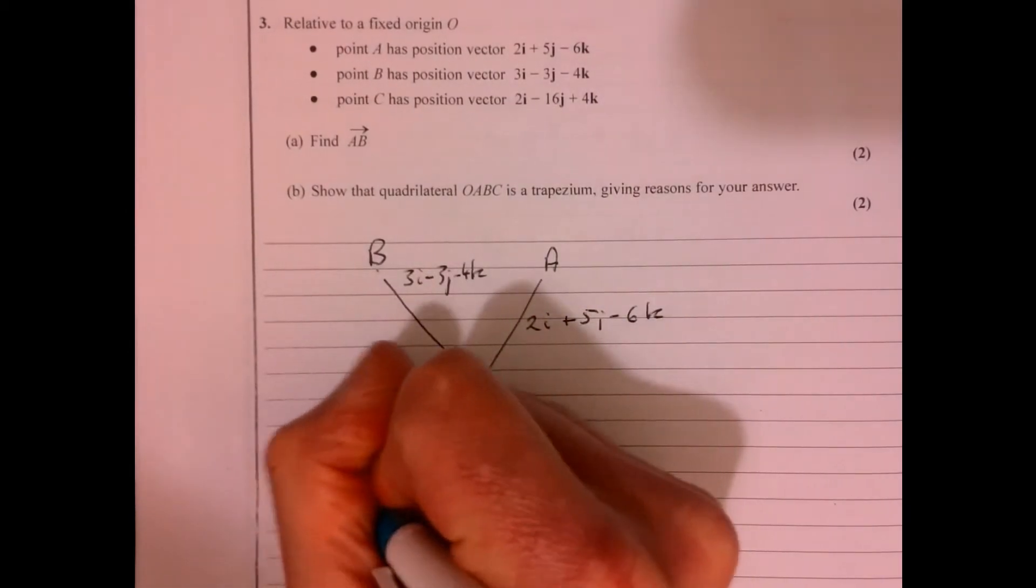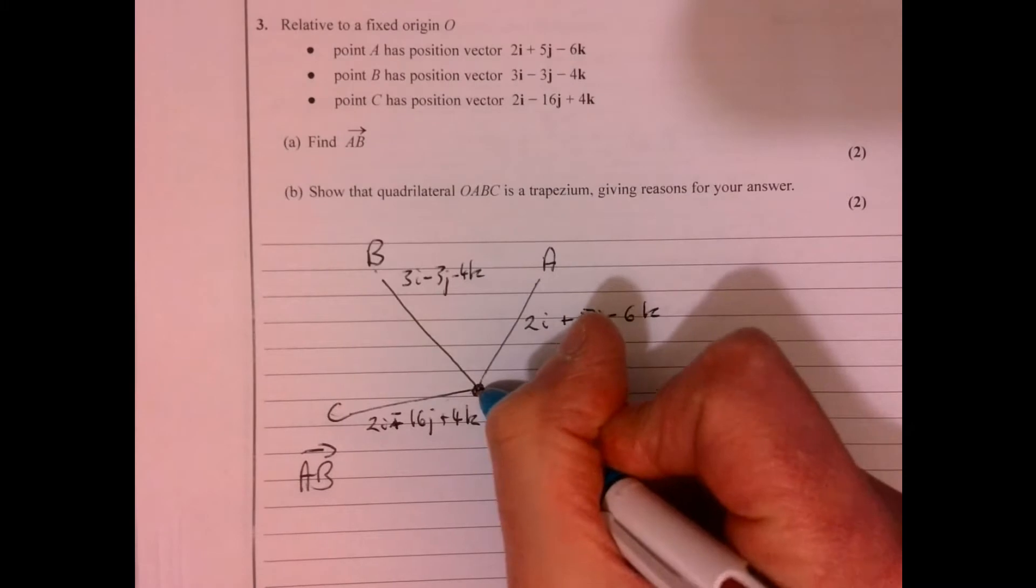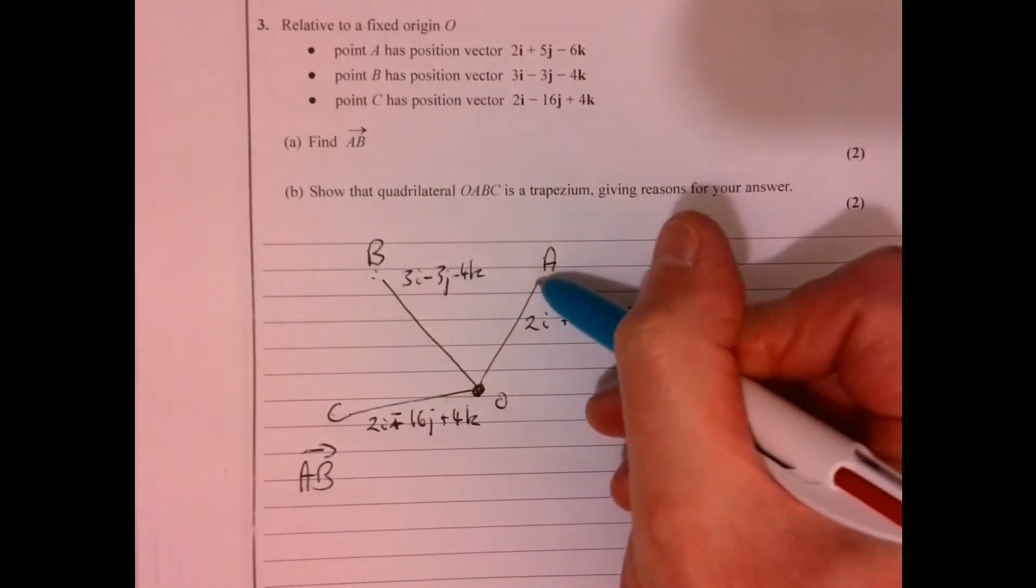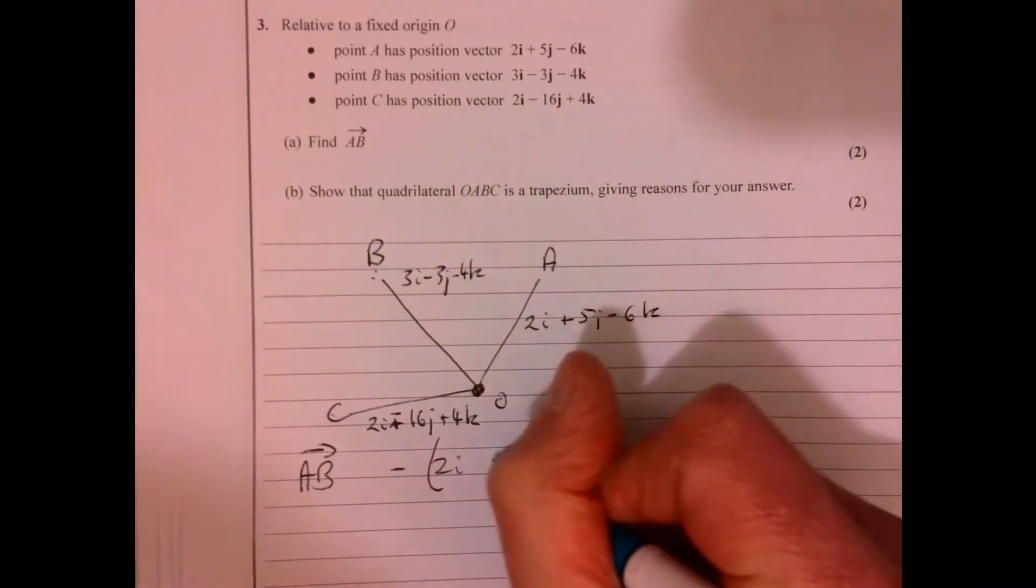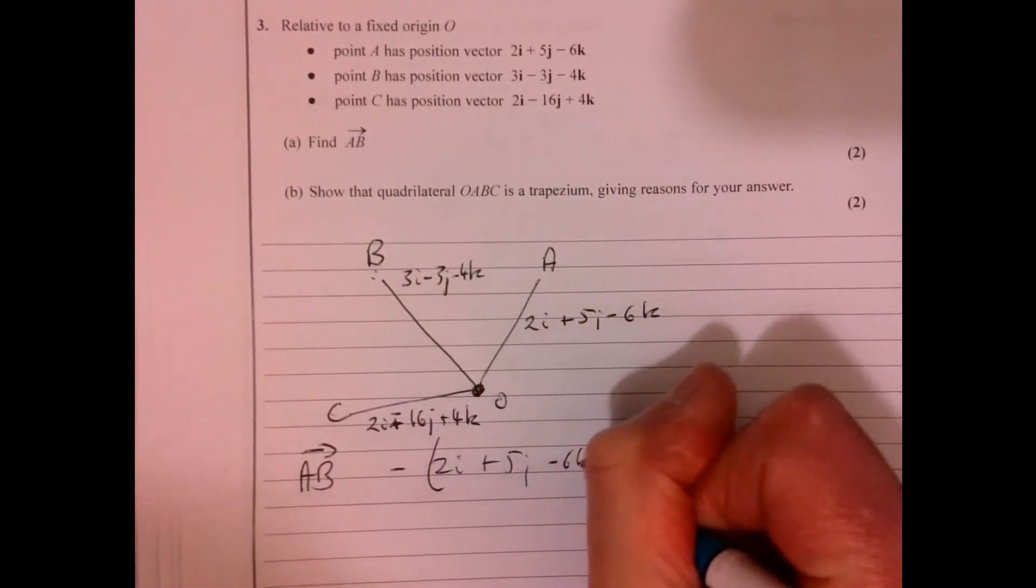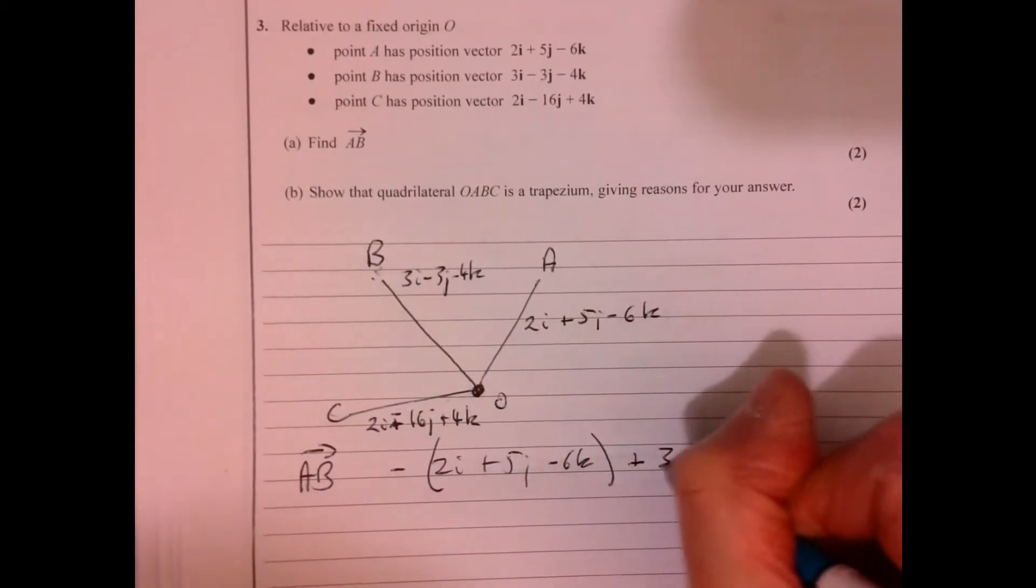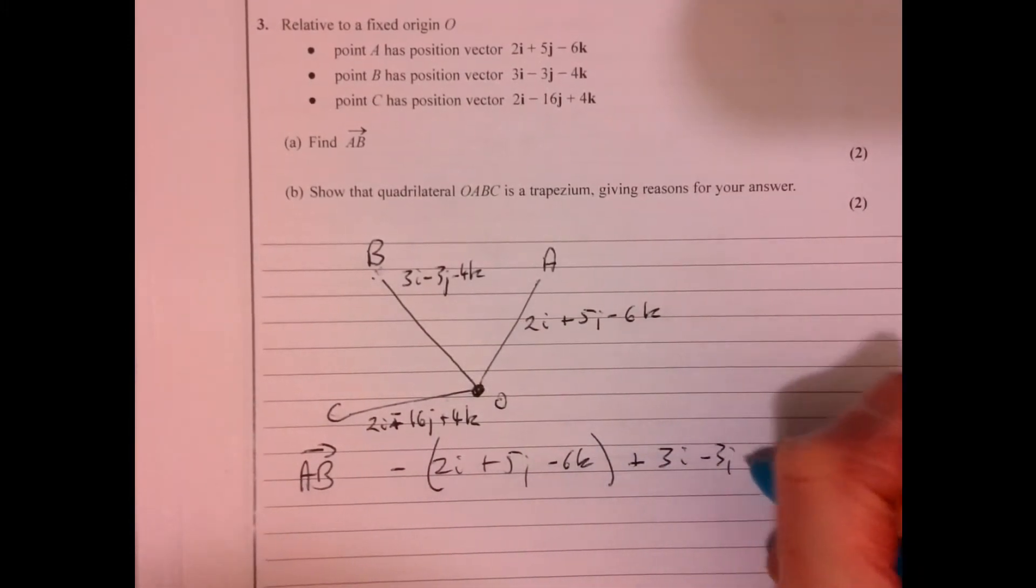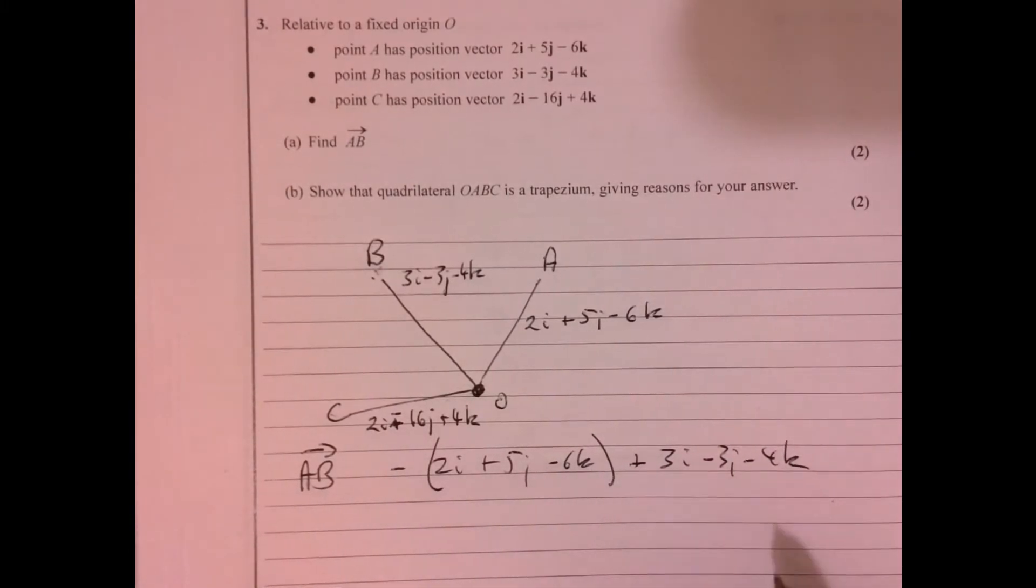So the first question is AB. That's that bit and that bit. So that's going to be minus 2i plus 5j minus 6k, and then plus this bit. So add minus 3j minus 4k. Minus these, add that bit.